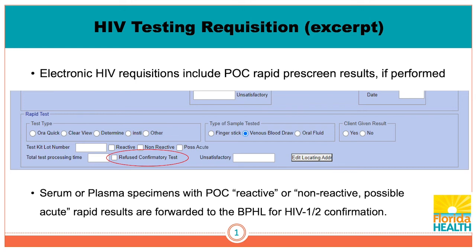Thanks to astute counselors — and we'll show some examples of that — by marking these boxes on the requisition, they are able to confirm that they were actually working with somebody in the acute stage.